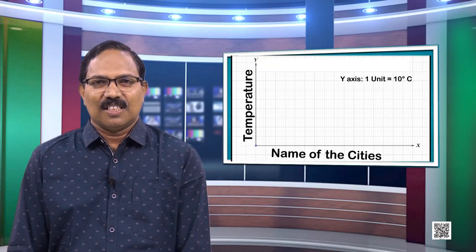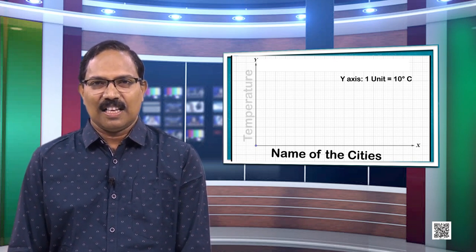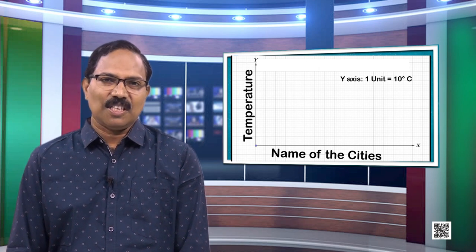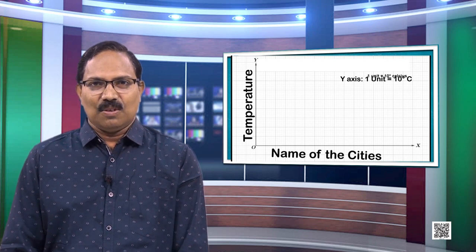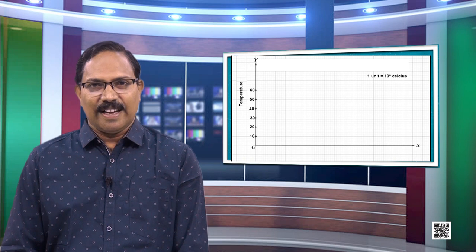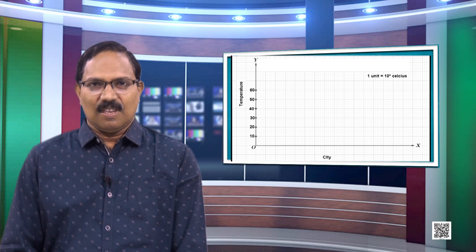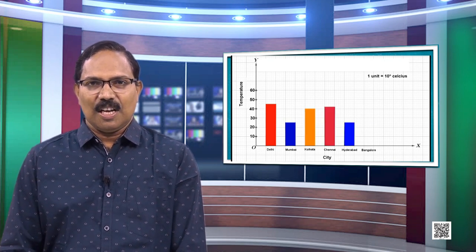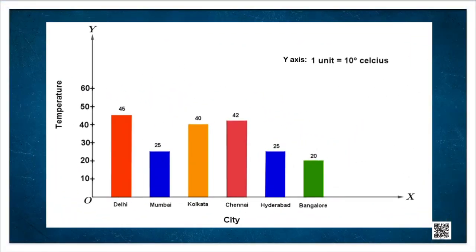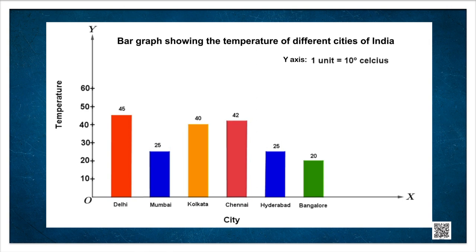Once you decide, label the axes accordingly — y-axis for temperature, x-axis for the names of cities. Now you have to draw equal-width bars against the different cities. Once you draw the equal-width bars, you will get a bar graph. For any graph, you need to put a title also. The title will be: 'Bar graph showing the temperature of different cities of India on a particular day.' This completes the bar graph.